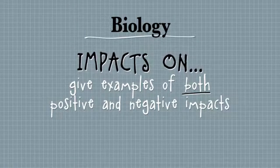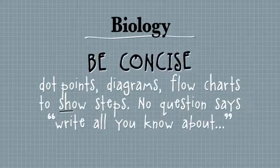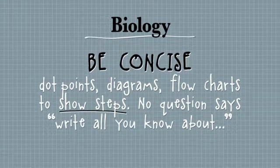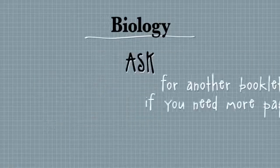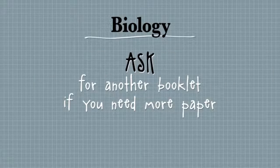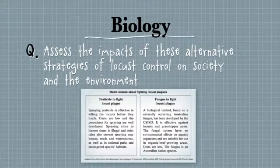You're also often asked about 'impacts' — that's a very common term. You should give positive and negative impacts; they've given you the plural here. If you find you're running out of time, just use tables, dot points, or diagrams. No question ever says 'write everything you know about photosynthesis,' so try to narrow down exactly what they want. If you need more paper, put your hand up and ask for another booklet — you can even get one just for rough working.